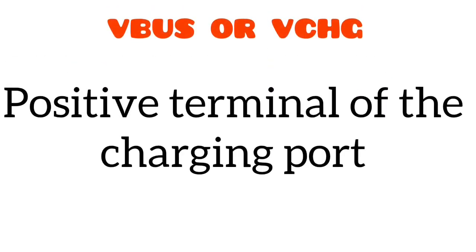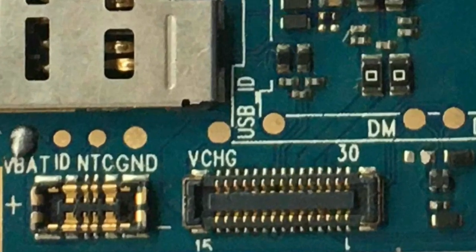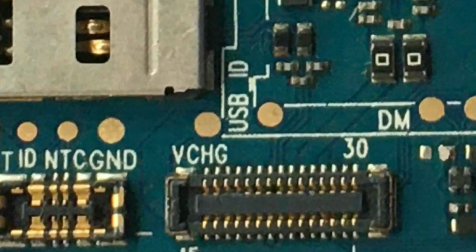Next we have the VBAT, or you can call it the VCHIG. It's the positive terminal of the charging port in the logic board. This is how to identify them on a logic board.